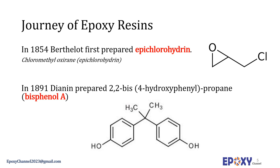Later, in 1891, Zinin synthesized a compound called bisphenol A, or BPA, by the condensation of acetone with two equivalents of phenol. This reaction requires a strong acid — for example, HCl — to be used as a catalyst. However, this BPA was not pure.